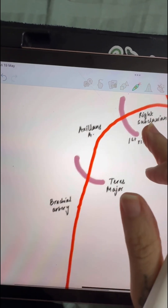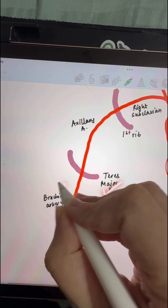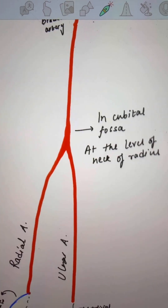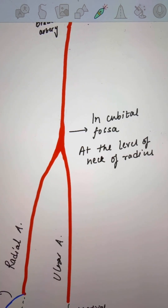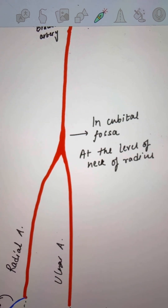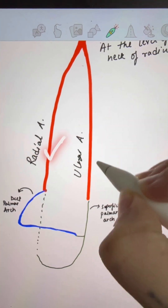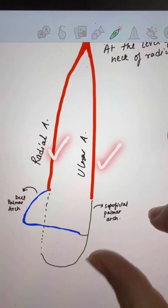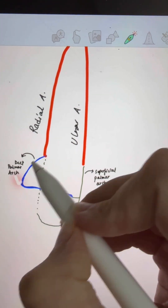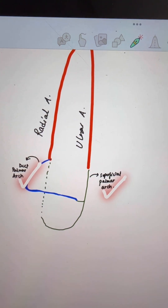As soon as the axillary artery passes through the teres major, it is known as the brachial artery. The brachial artery then, at the level of the neck of the radius in the cubital fossa, gets divided into the radial and the ulnar artery, which later form the deep palmar arch and the superficial palmar arches.